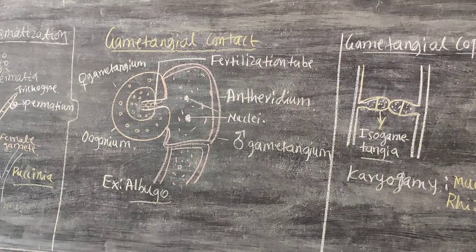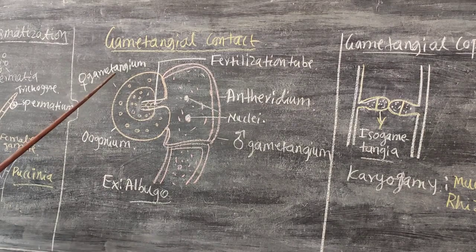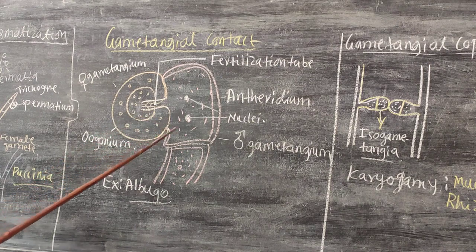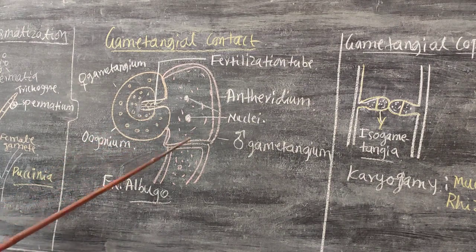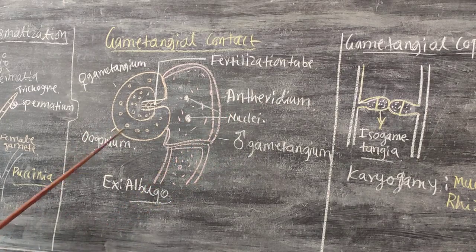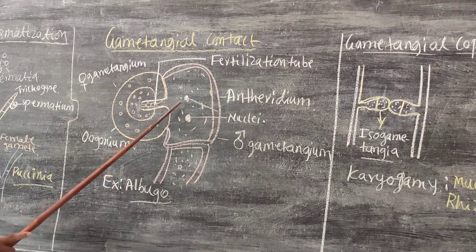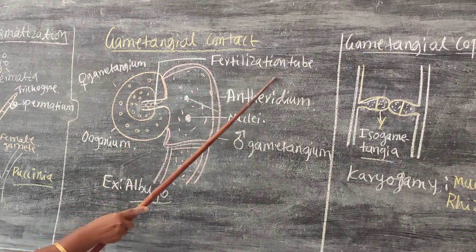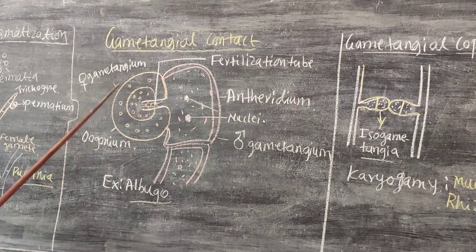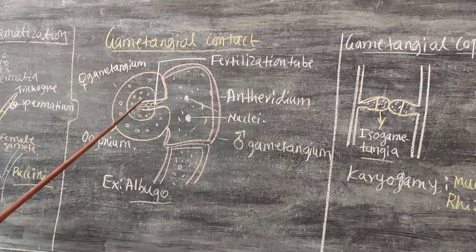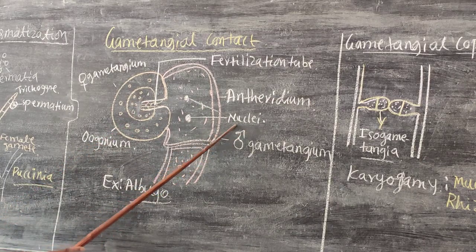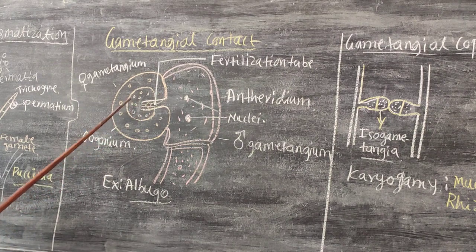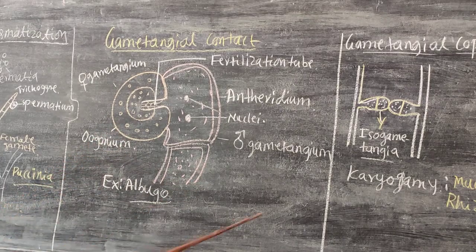These are the different modes of sexual reproduction in different fungi. In the case of gametangia contact, the male gametangium is indicated by the antheridium and the female gametangium by the oogonium. The male gametangium produces a tubular structure called the fertilization tube, which pierces into the female gametangium. Through this fertilization tube, the entry of the nuclei takes place, and fusion within the female gametangium results in the formation of a diploid structure.